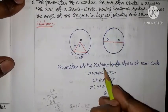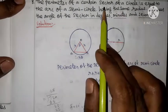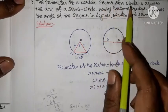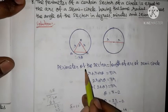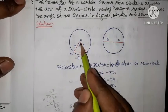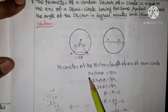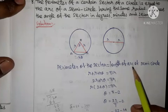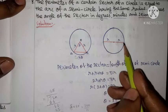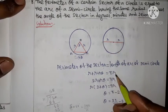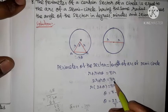Perimeter of sector equals length of arc of semicircle. The sector of the circle equals the arc of the semicircle. The perimeter of the sector is its boundary: r plus r plus r·theta. The arc of the semicircle is pi·r.